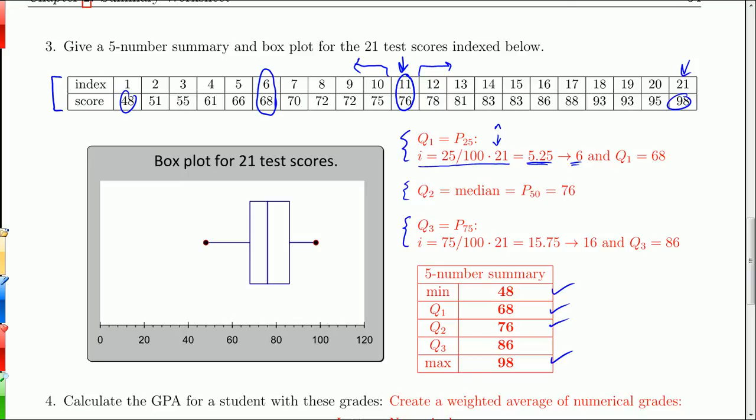And then Q3, I have to take 75% of 21 to get my index. The index is 15.75. Because it's not a whole number, I round up and use the 16th term. So I use the 16th term, which produces an 86. So that's the five-number summary. You get a box plot that looks like this. This is from the min to the max. The median is right here at 76, and we have 68 and 86, Q1 and Q3. So they seem to match up to the numbers. It gives us a picture of what the data looks like.